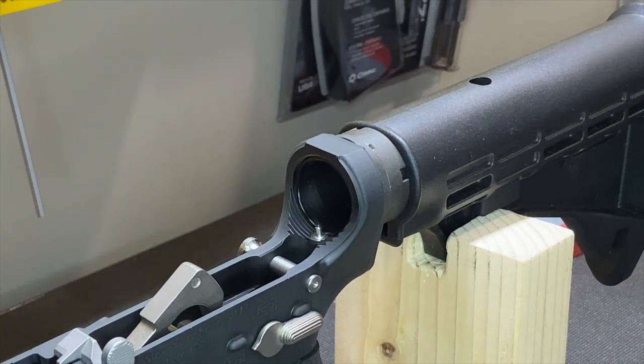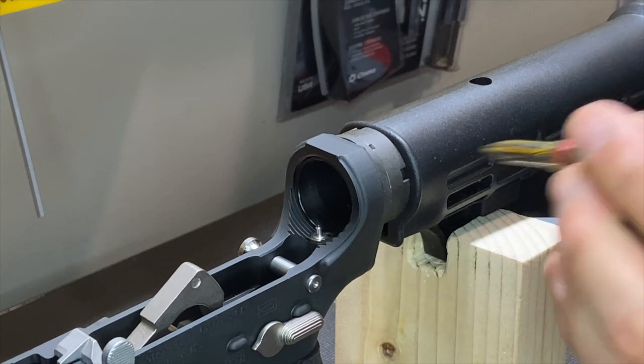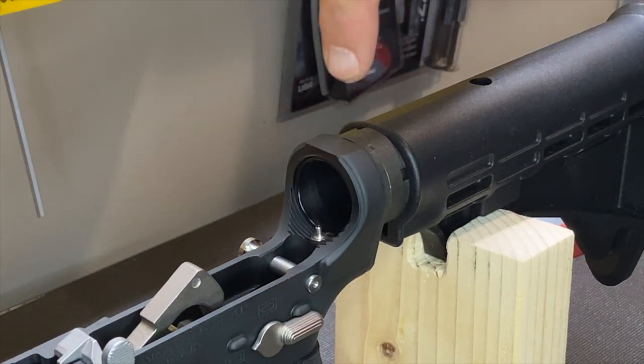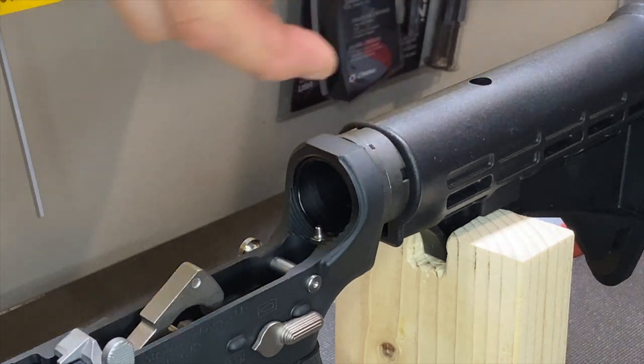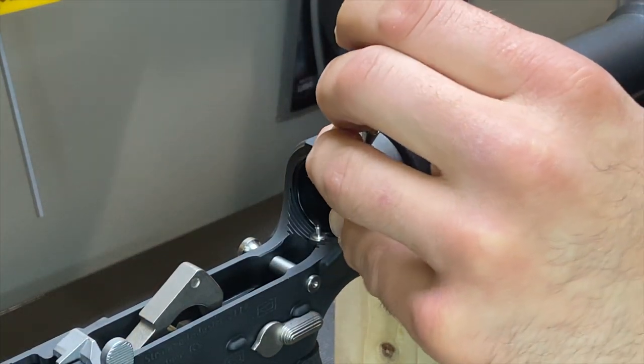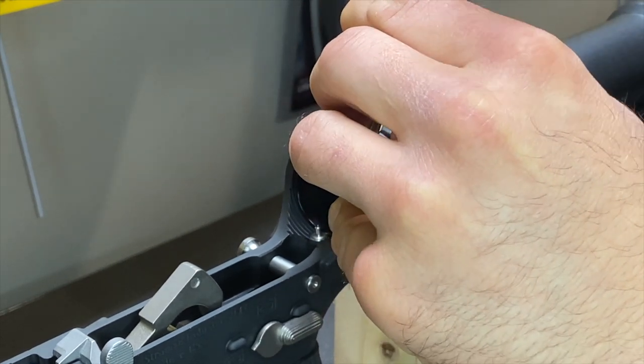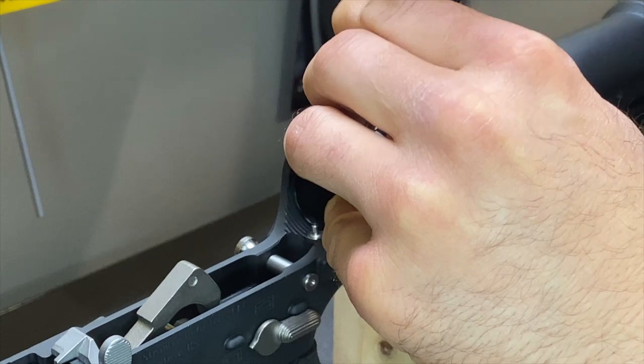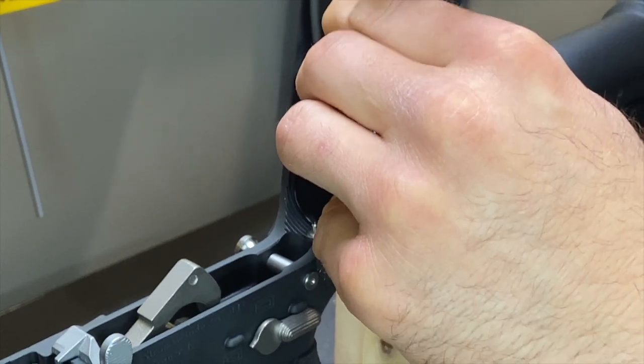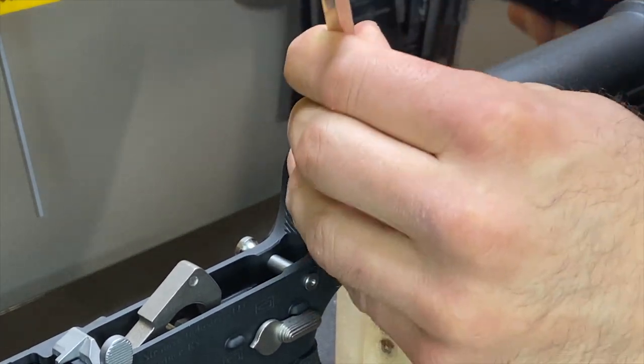That way when I stake it, not putting too much pressure on the wrong things. So staking, you'll see this little detent there. I'm just going to stake down into our end plate and then back into our castle nut. So I just go halfway, kind of halfway deep in the end plate.